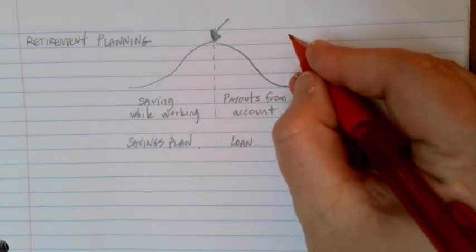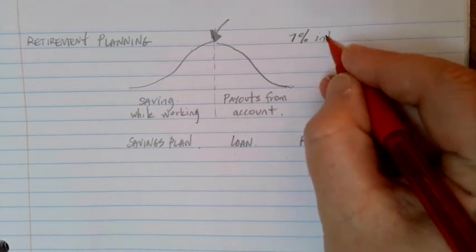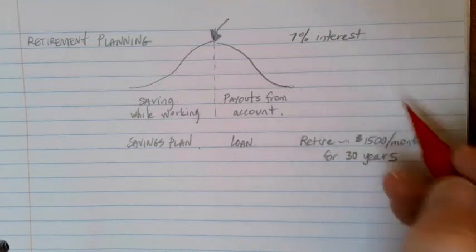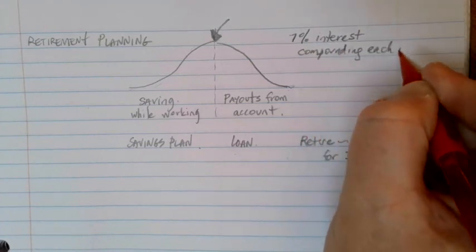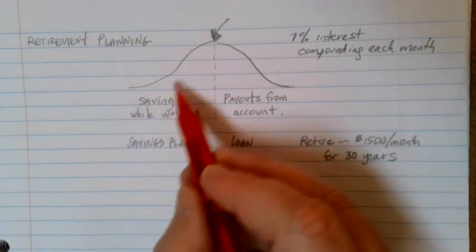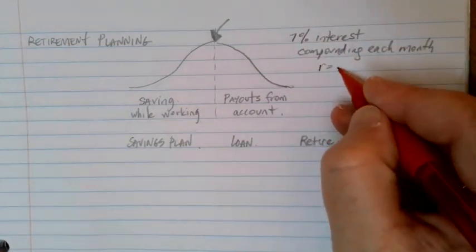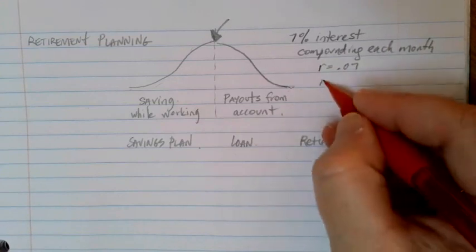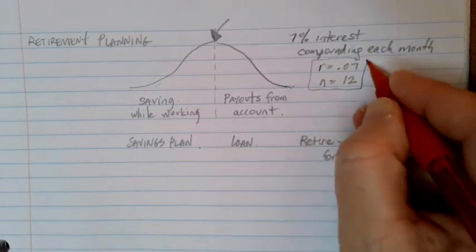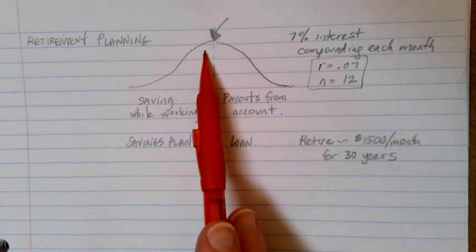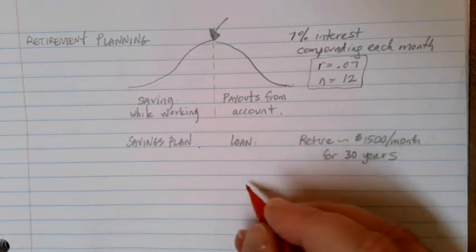In this case, let's consider that we have an account that's paying 7% annual interest. And we're going to be making contributions in this case every month. At the beginning, we're going to be saving every month. At the end, we're going to be taking money out every month. So our 7% interest is going to be R equals 0.07. Because we are doing all of these in terms of monthly payments and deposits, what we're going to be looking at is N equals 12. So if I want to figure out how much money I need in my account, I can use the loan formula and these conditions to get that value for A.